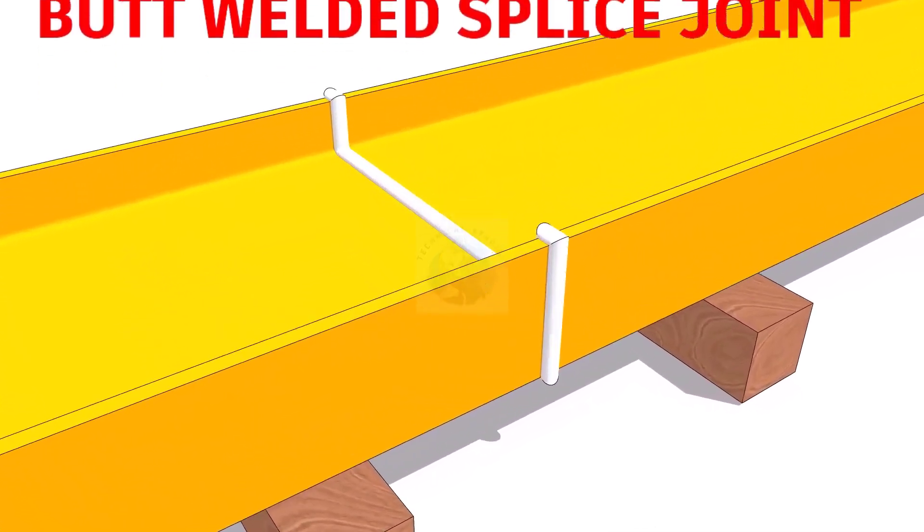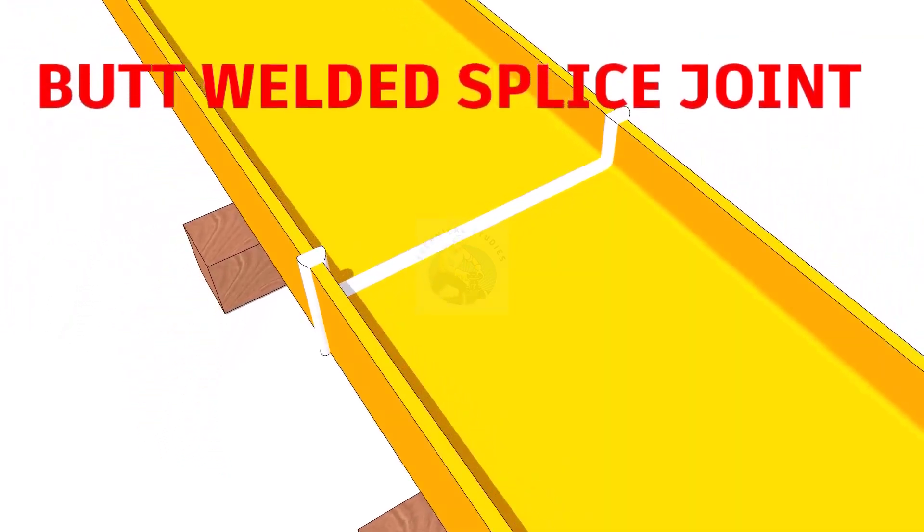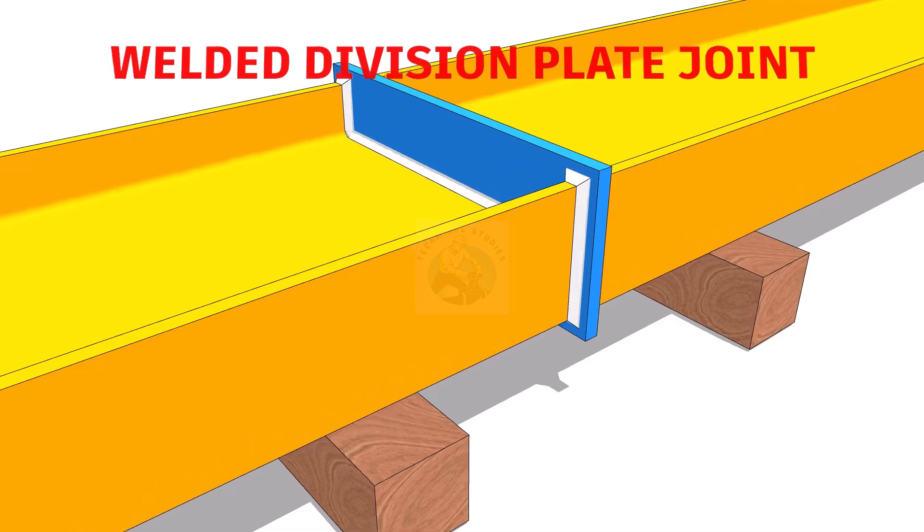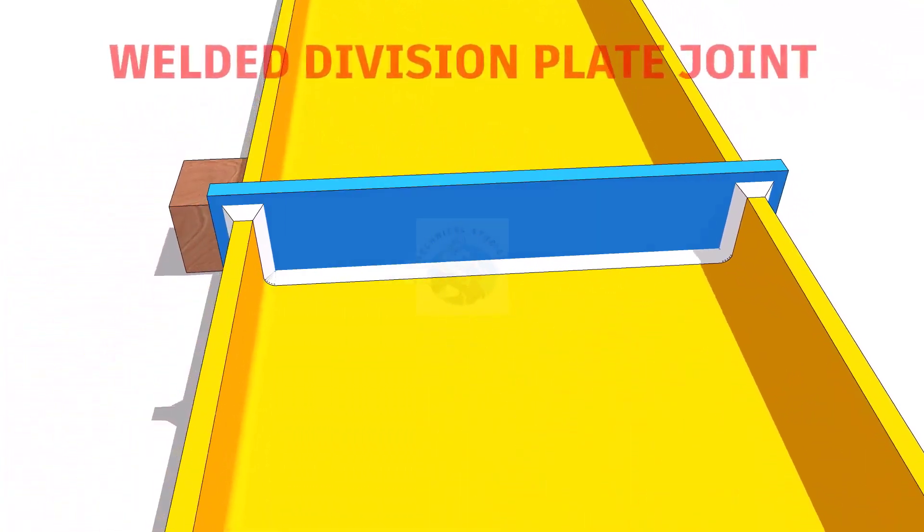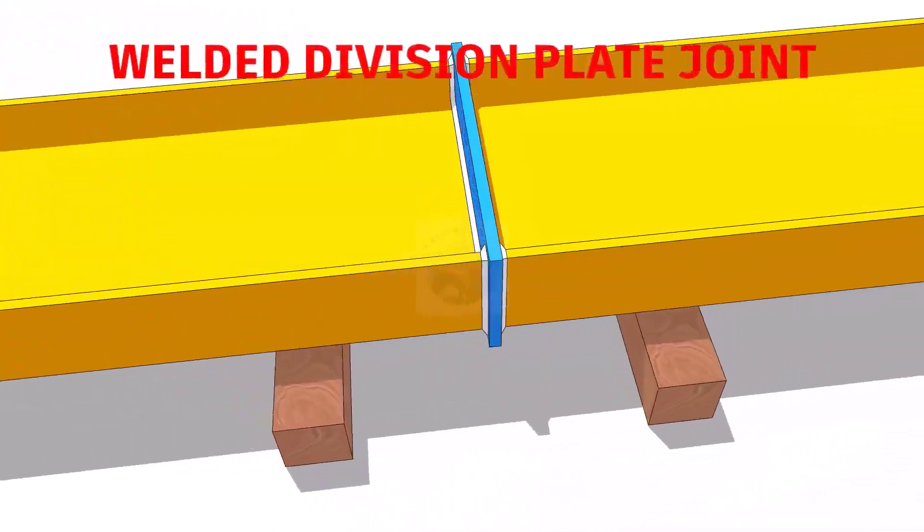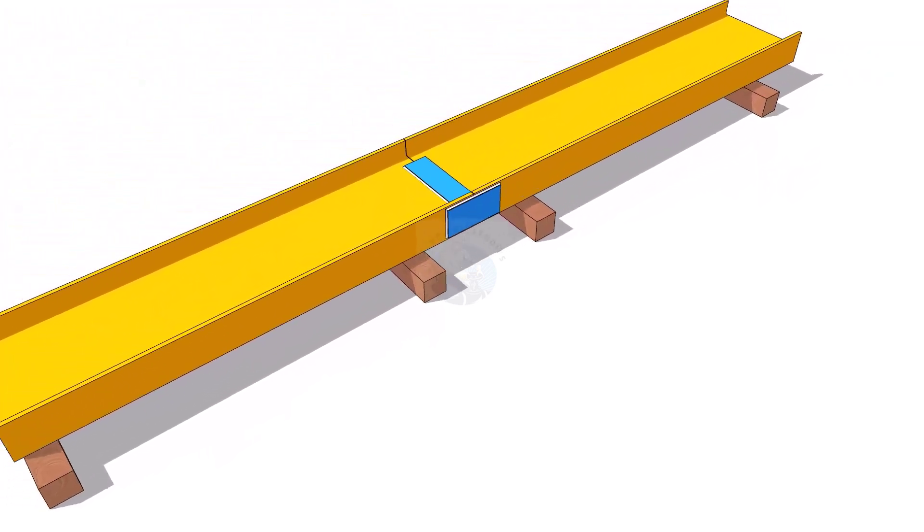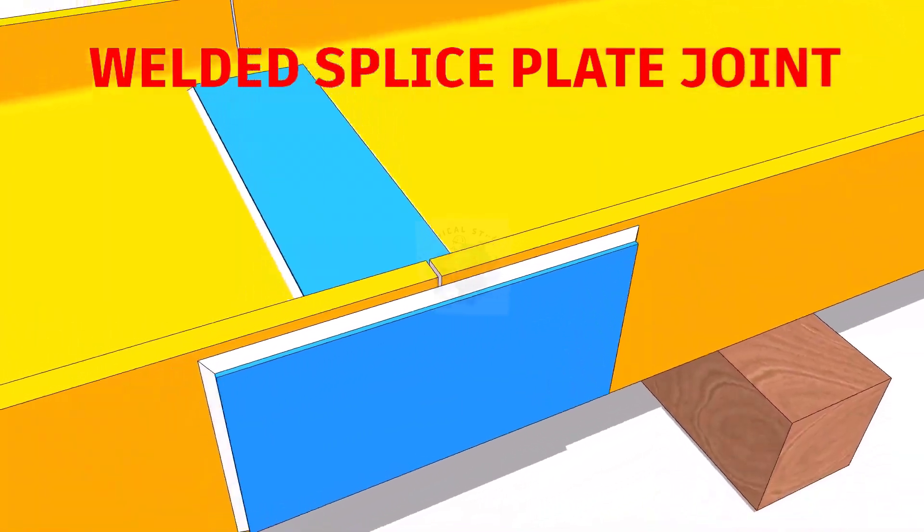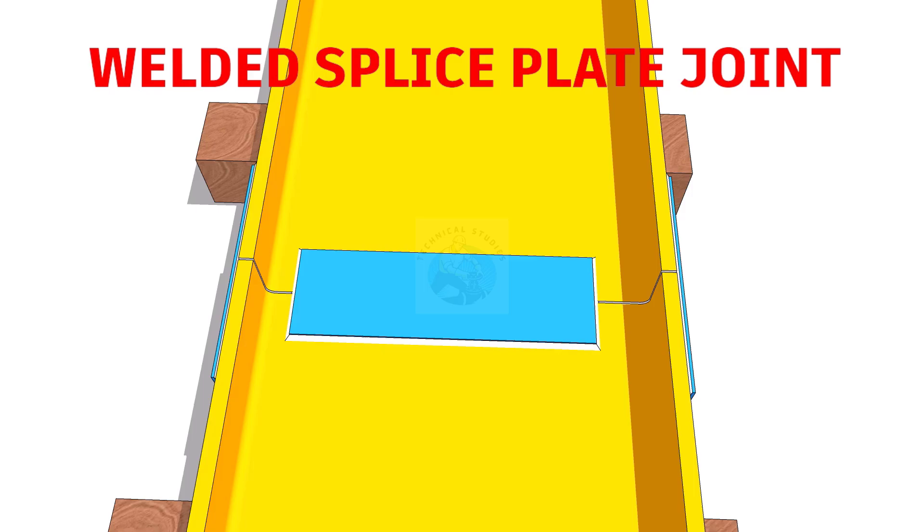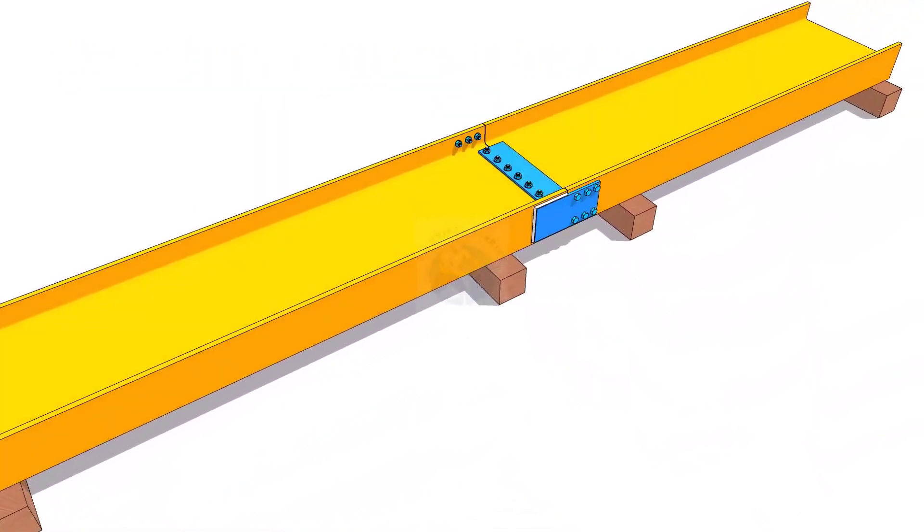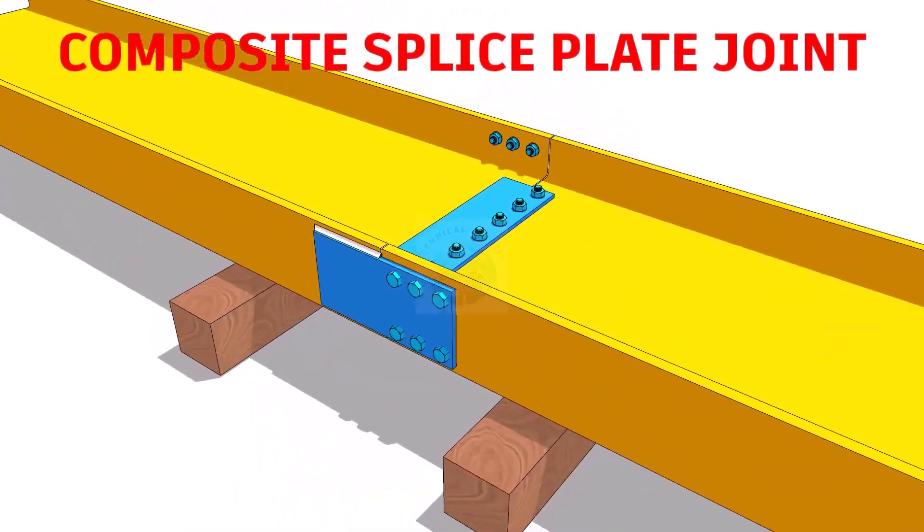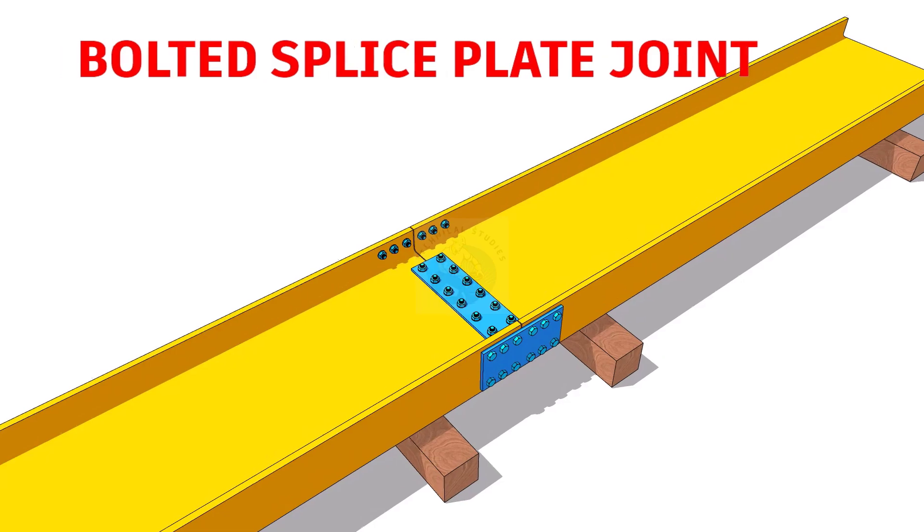There are many methods to joint two or more columns or beams together. Some of the common types of splice joints are: butt welded splice joints, welded division plate joint, welded splice plate joint, composite plate joint, bolted splice plate joint, etc.